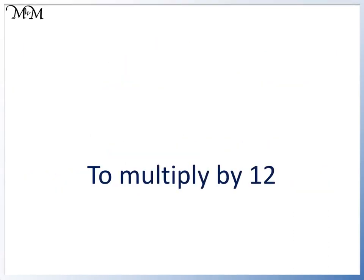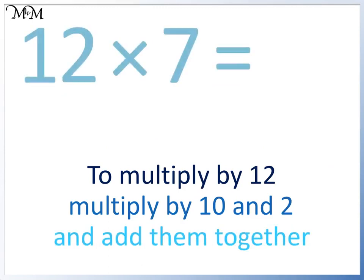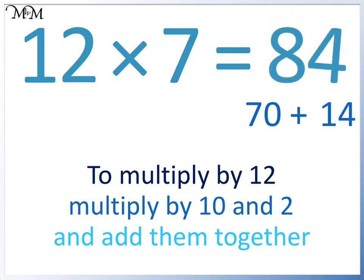To multiply by 12, multiply by 10 and by 2, then add them together. 10 times 7 equals 70 and 2 times 7 equals 14. 70 plus 14 equals 84. Also, the digits 8 and 4 add to make 12.